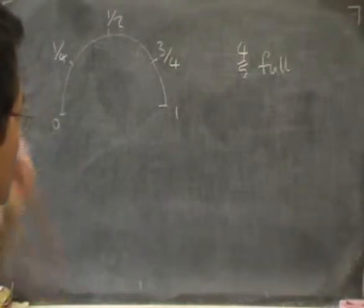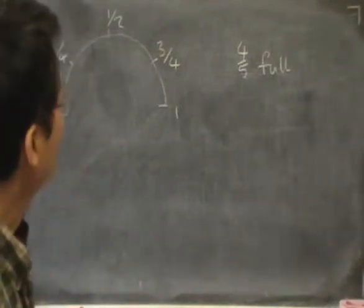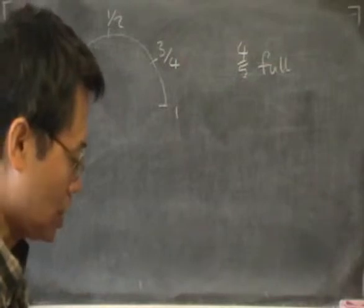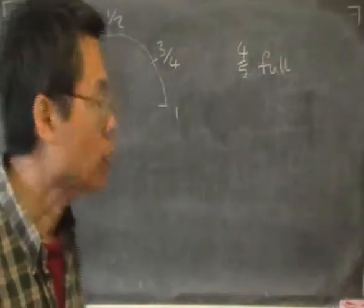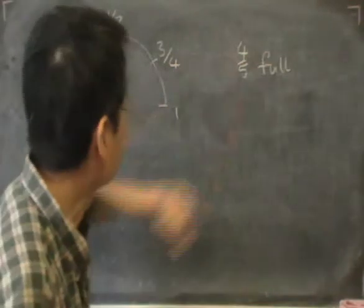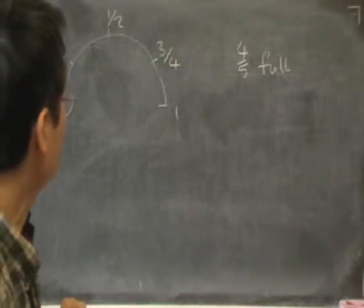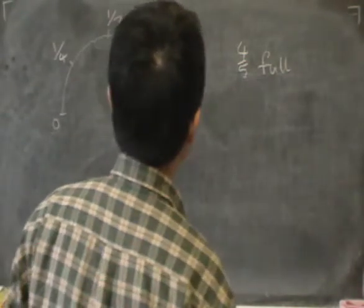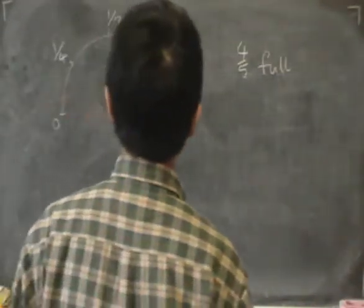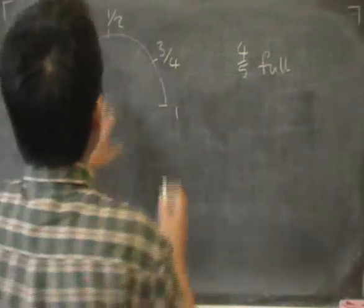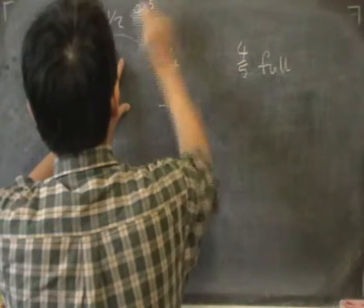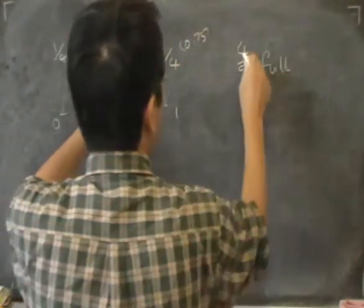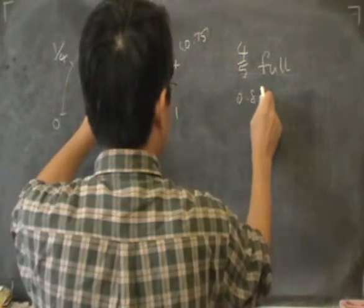So the first thing we need to know is roughly where it is. Let's think about whether four-fifths is more than half. Four-fifths would be more than half. A quick way to think about this is to write down the decimals, because we can compare the decimals directly. That's 0.5. Half is 0.5. Three over four is 0.75. And four-fifths is 0.8.